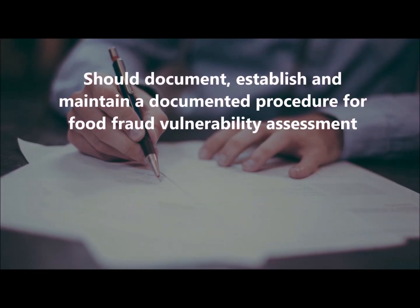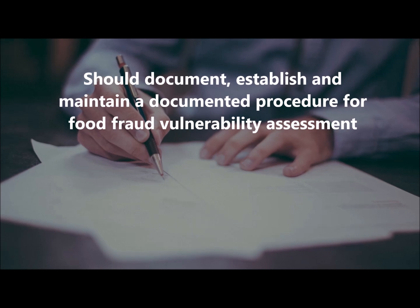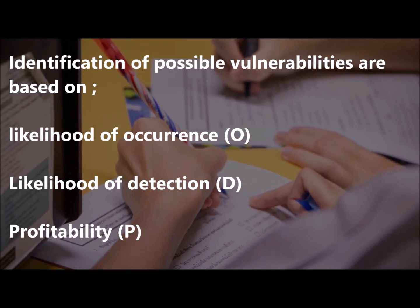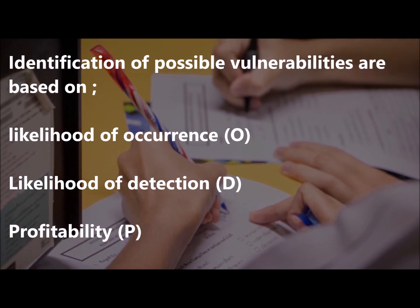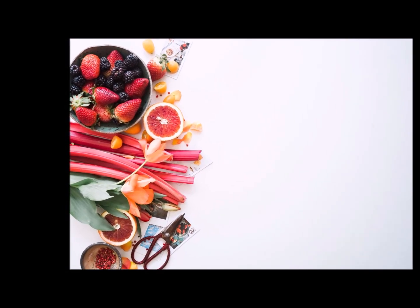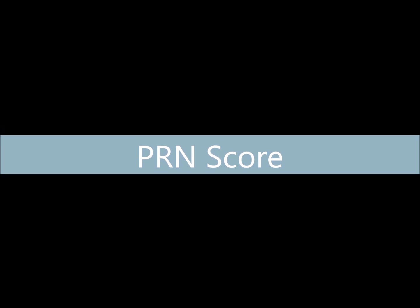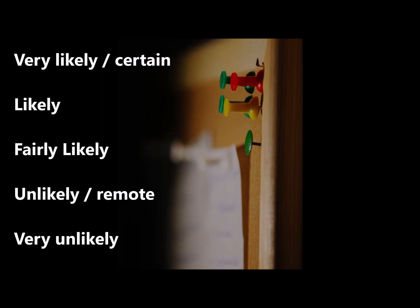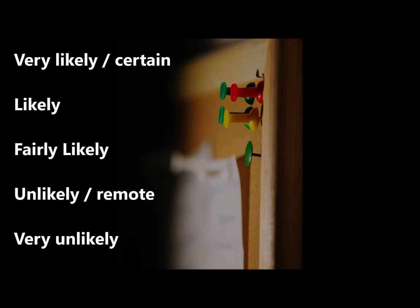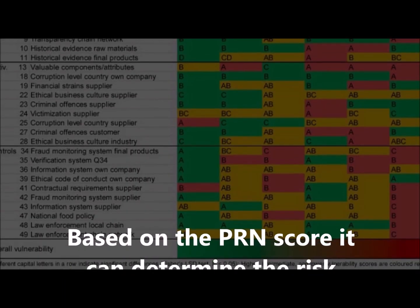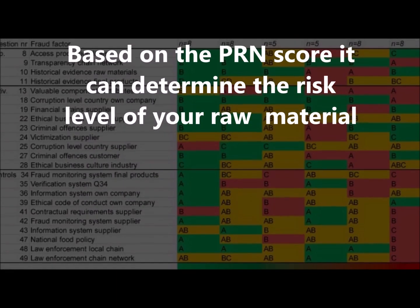Now let's see each step in detail. Step 1: Conduct vulnerability assessment. The organization should document, establish, and maintain a documented procedure for food fraud vulnerability assessment. Identification of possible vulnerabilities is based on likelihood of occurrence, likelihood of detection, and profitability. All information related to raw materials is categorized under these factors. Assessment of vulnerabilities is based on a PRN score, which you can scale as per your preference — for example: very likely or certain, likely, fairly likely, unlikely or remote, and very unlikely. Based on the PRN value, you can determine which category your raw material belongs to.